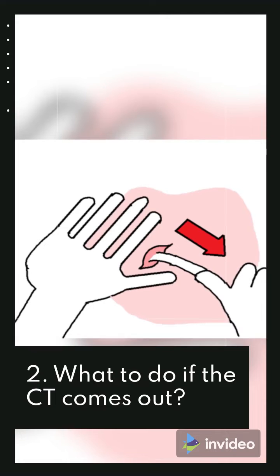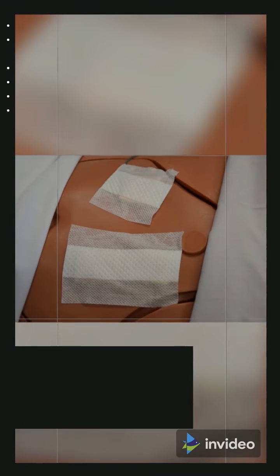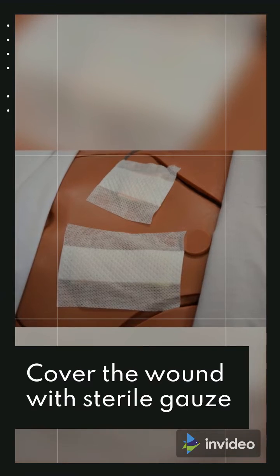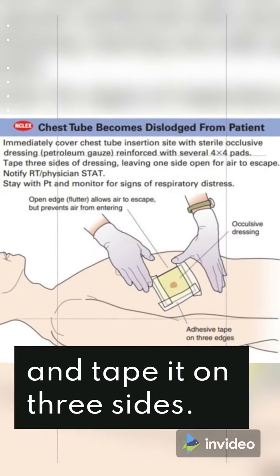What to do if the CT comes out? Cover the wound with sterile gauze and tape it on three sides. Only on three sides to avoid air trapping into the lungs.